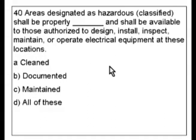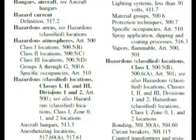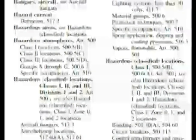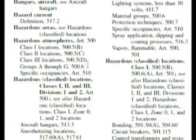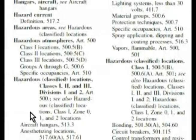We could look for 'hazardous' or 'classified.' Let's look for hazardous — that seems to be what we really want. Here we are in the index under hazardous areas, and it says see hazardous classified locations, which is just right down here. This is a huge section — it takes maybe two pages or so of the index. As you start going down and looking at these, I guarantee you're going to find a lot of questions on hazardous locations on your test. You've got to learn how to navigate this section of the index.